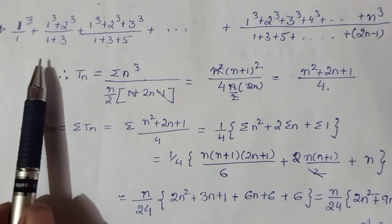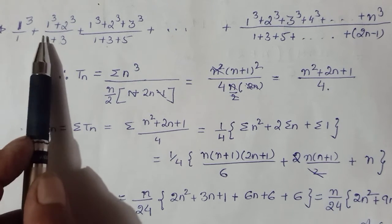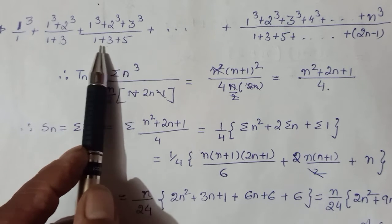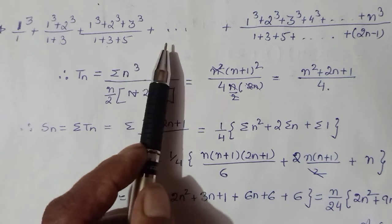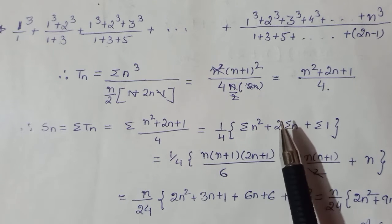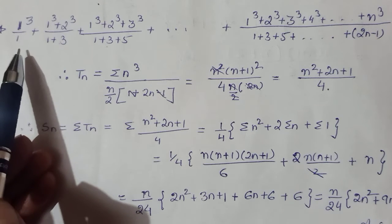Okay, this is another sequence given to you: 1³ upon 1, 1³ + 2³ upon 1 + 3, 1³ + 2³ + 3³ upon 1 + 3 + 5. You have to sum this up to n terms. First we will find its nth term. By symmetry, if you can see, first term has one cube, second term has 1³ and 2³, then 3³ gets added.